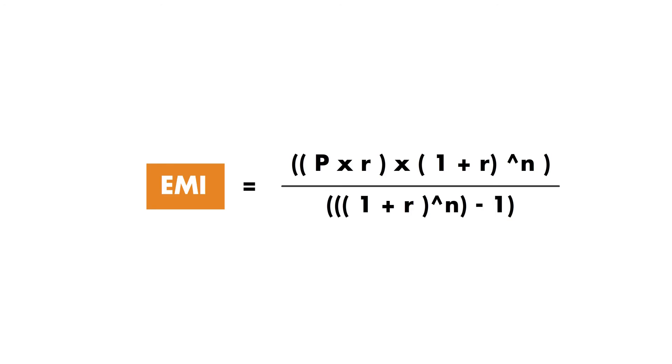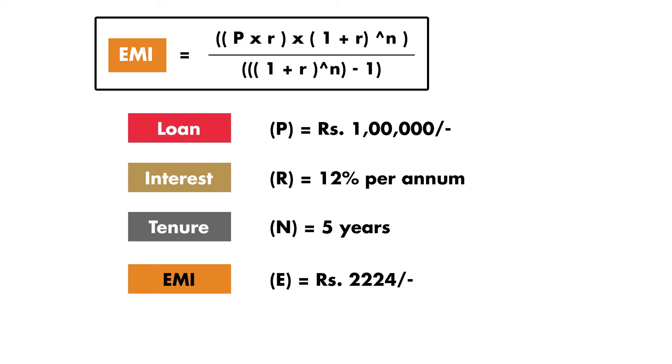Every time there is a change in the interest rate, a borrower can choose to make an adjustment in their installment amount instead of continuing with the same EMI. To recalculate the new EMI, we must consider the revised parameters of this loan. Some part of the loan has been repaid. Therefore, the new loan will be the principal outstanding at the beginning of the month in which the interest rate increased — in this case, the 5th month.